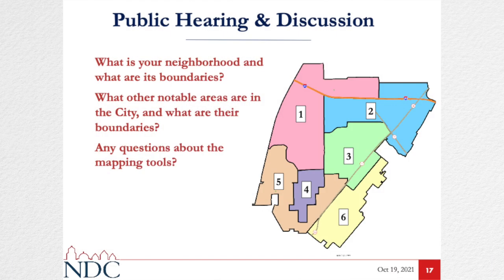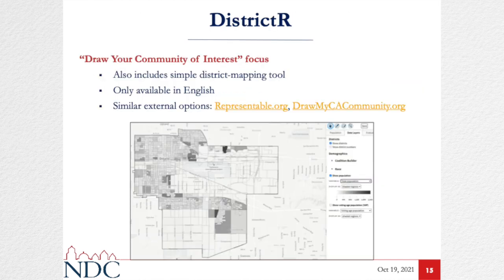If you want to provide your feedback in a different way, we're open to listening — email us. We can work with other kinds of files as well. Draw My CA Community is the state's redistricting tool, really designed for the state redistricting commission, but some people have taken the time to learn how it works. If you have it, we'll take it — just take a screenshot and send it to us. There's also Dave's redistricting and other programs out there online, though some are limited in the data they provide or the support they have.